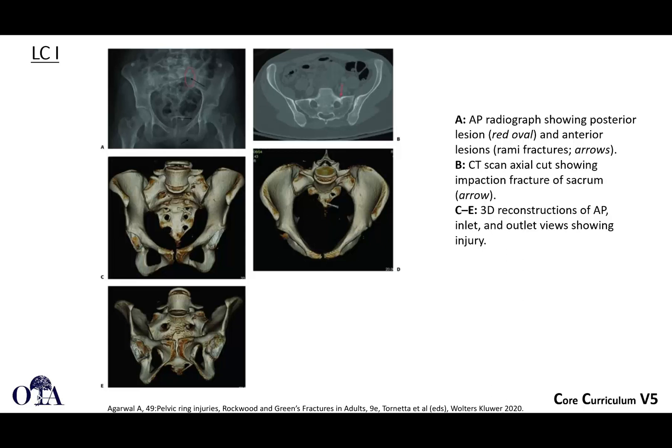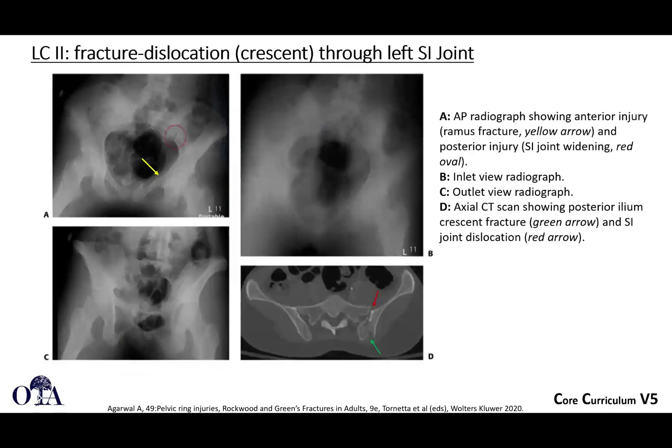An LC1 injury is shown on x-ray and CT scan. The red arrow highlights an impaction or buckling of the anterior sacral ala at S1, and frequently there is no significant disruption to the pelvic ring. With an LC2, you have a somewhat classic fracture-dislocation through the SI joint, producing the so-called crescent fracture shown with the green arrow — a posterior ilium fracture going into the SI joint — along with anterior ramus fractures and subluxation or dislocation at the SI joint.